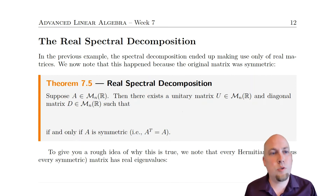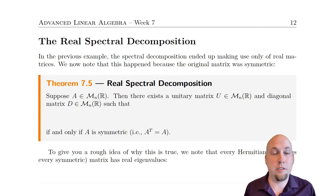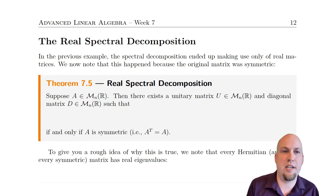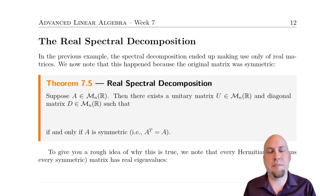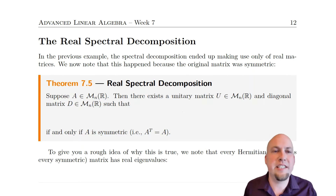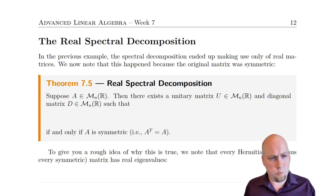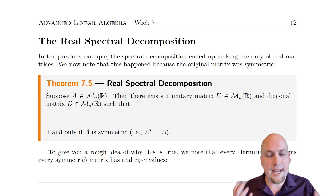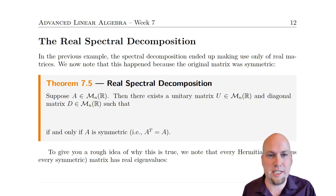In lectures 27 and 28 we looked at the complex spectral decomposition and learned how to compute it. We saw that some real matrices do have a spectral decomposition, but you need to make use of complex matrices — a complex diagonal matrix and a complex unitary matrix — to actually make it work. So we're going to see in which situations you can avoid that extra technicality.